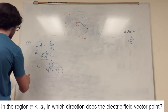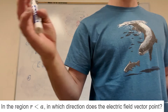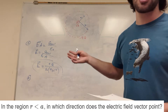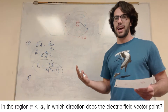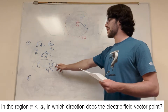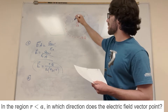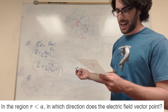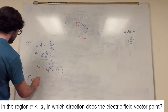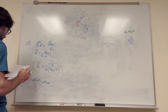Part B asks which direction the electric field vector points in that region. Because the enclosed charge q is positive, the field is going to be pointing outward in all directions. So the answer is radially outward.